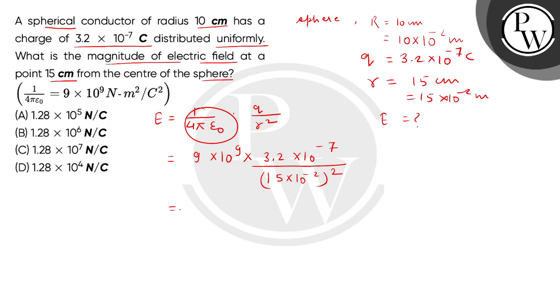So bichon हमरे पास में ये जो finally solve करने के बाद answer आएगा. That will be 1.28 multiplied 10 to the power 5 newton per coulomb. So correct answer is option A. Thank you.